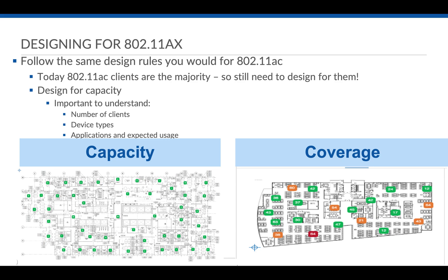Always try to understand the number of clients and device types expected on the network — some may be high-end, some low-end — and the applications they'll run and expected usage. The key takeaway is to design the network on capacity. If you design on capacity, you're setting the network up for the next five years. If you design only on coverage and device count grows, bandwidth gets choked and the APs come under stress.